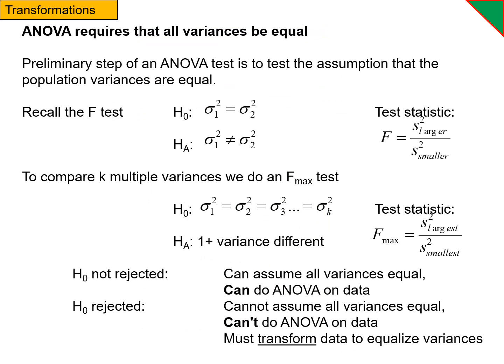Okay, so remember this? This is the Fmax test. This is what we would do to figure out if the variances were equal. It's related to the f-test, which we've done before. Very similar test statistic.